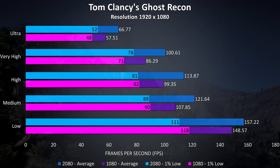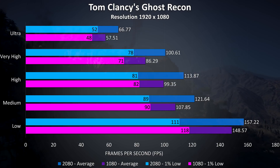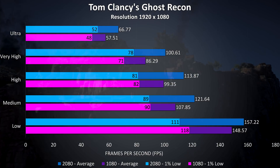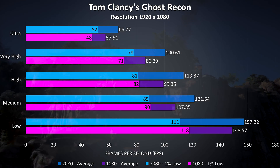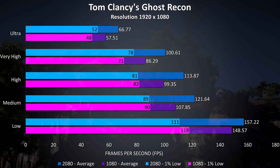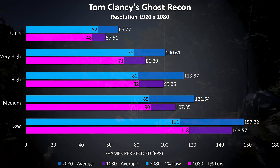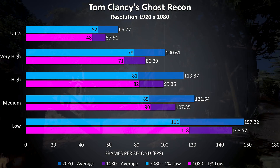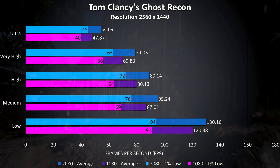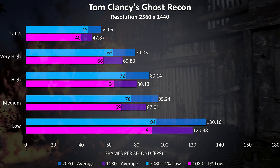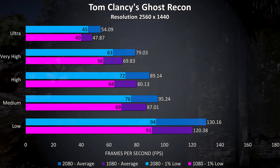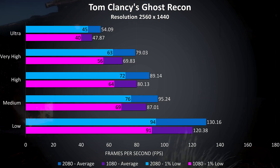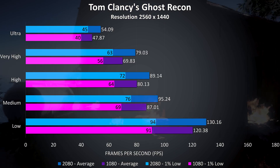Ghost Recon was another resource intensive game tested with the built-in benchmark. At 1080p with ultra settings the 2080 was 16% ahead of the 1080 in average FPS, and had an 8% higher 1% low. With the higher 1440p resolution the 2080 was now 13% ahead of the 1080 with regards to both average FPS and 1% low.